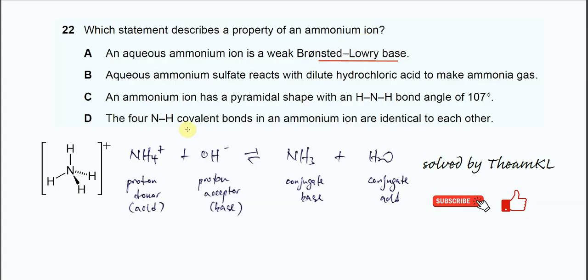But we know that ammonium normally will donate protons to others when it reacts. For example, when ammonium reacts with hydroxide, it donates protons to hydroxide and forms ammonia. Therefore, ammonium in this reaction is a proton donor, which is an acid. So the first statement is not really true.